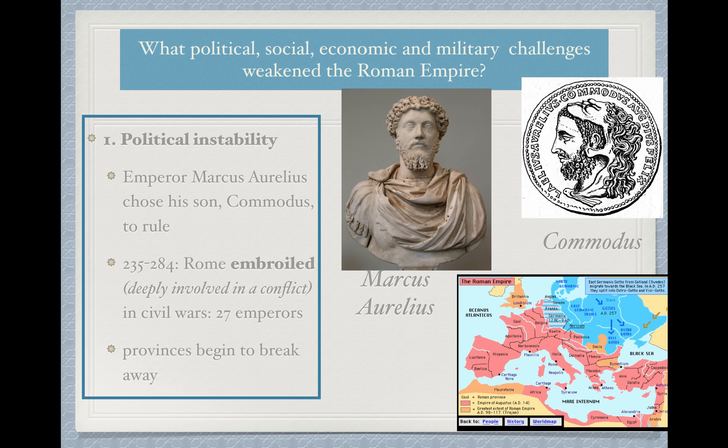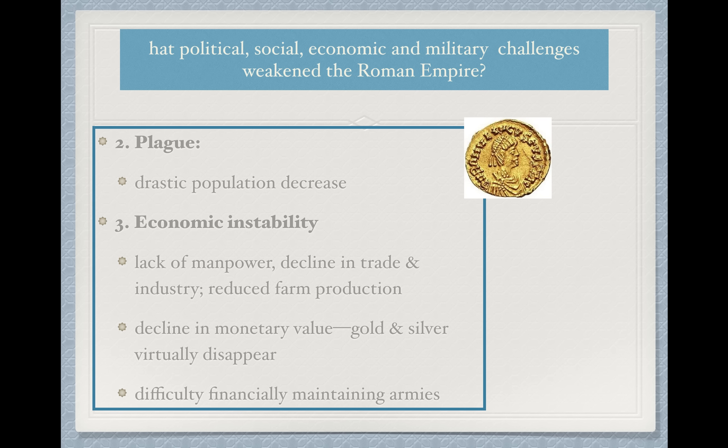With that incredible instability, the provinces — meaning the outer regions — began to break away. Rome was also starting to face threats from outside groups coming in to invade in some of the outer regions. There was also a brief plague — a widespread disease — which consequently caused a drastic reduction in population. I'm numbering these — I invite you to do so as well. These are reasons that were weakening the Roman system and the Roman Empire.